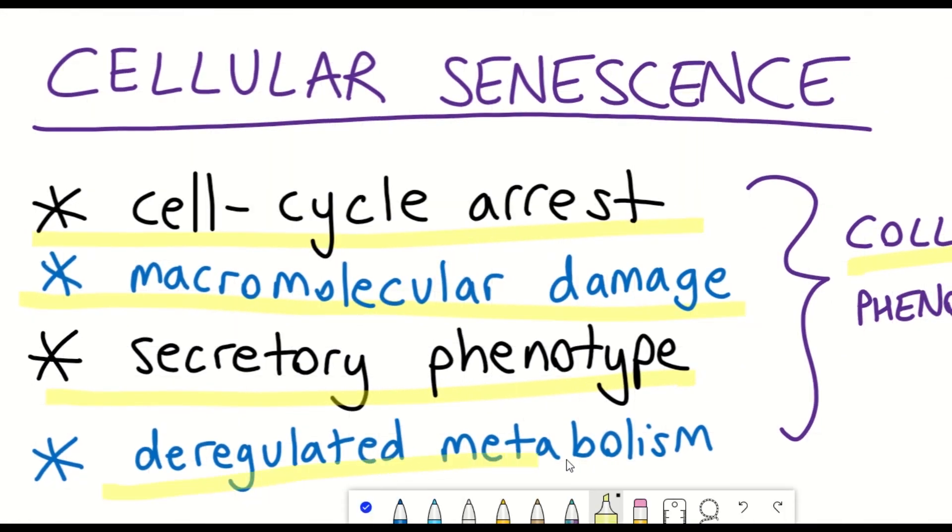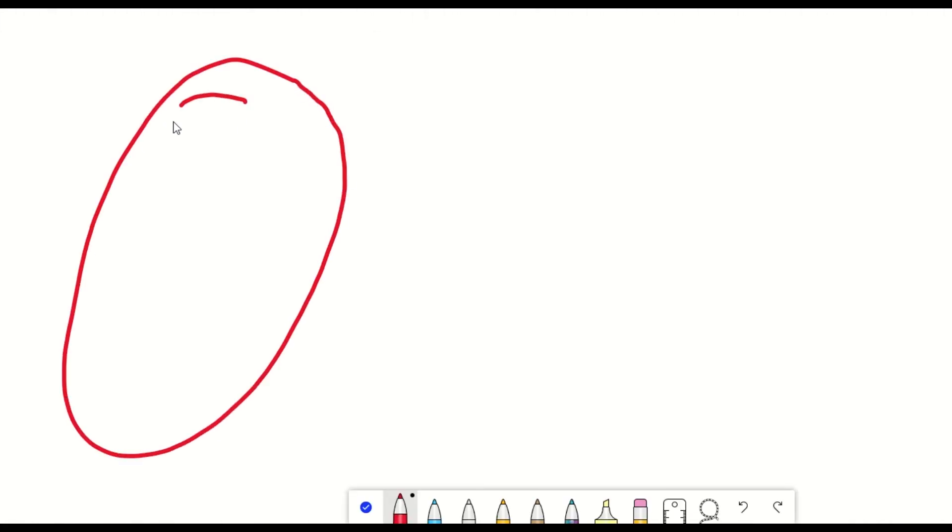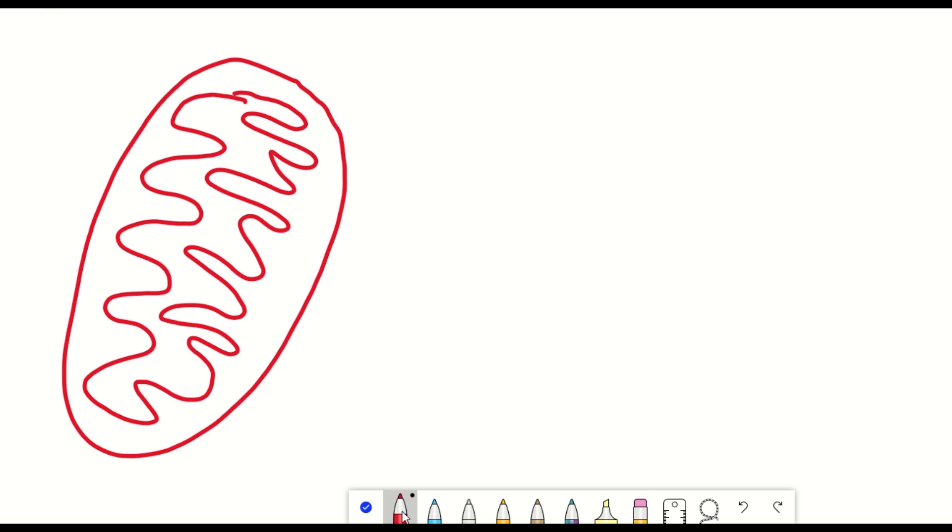So senescent cells are often referred to as zombie cells. However, senescent cells are actually highly energetic and are constantly producing these factors that we've already spoken about in the SASP. And so it requires energy that is generated in the form of ATP from mitochondria.